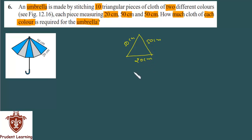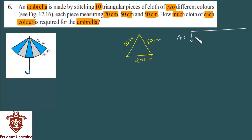If all the triangles are identical, then the area is the same. We can find this area using Heron's formula, because there are three sides given. Heron's formula for area is: under root of s into s minus a, into s minus b, into s minus c.